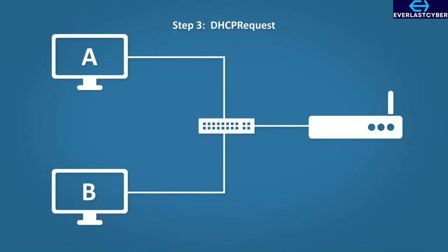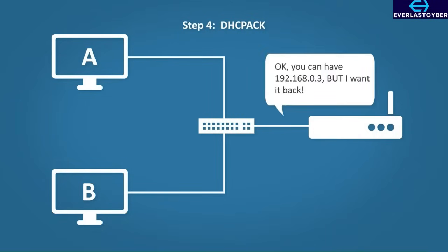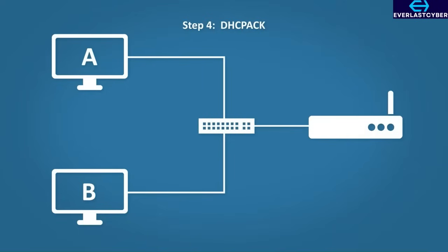Step 3: DHCP Request. The host says, 'Awesome, I'll take it,' and sends the request to the DHCP server. Step 4: DHCP Acknowledgement. The DHCP server sends the IP address to the host, along with the subnet mask, the default gateway, and the DNS server.